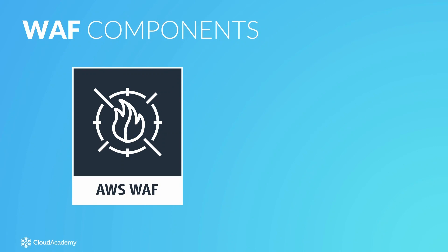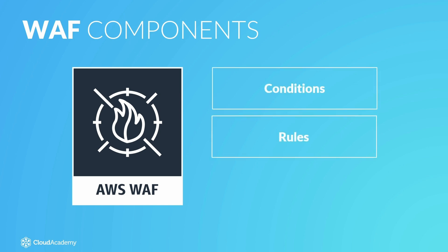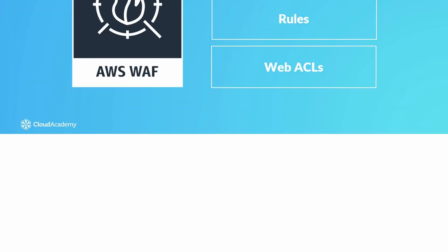There are a number of essential components relating to WAF, these being conditions, rules, and web access control lists, also known as web ACLs. Let me explain each of these individually to see what part they play within the service, starting with the first building block of the configuration, that being conditions.